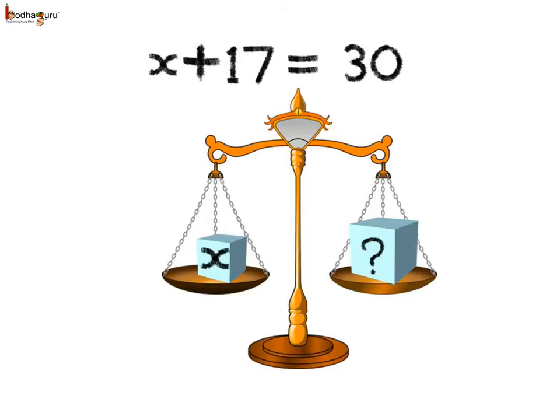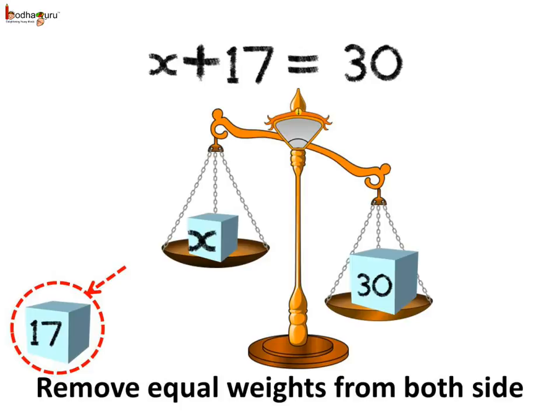Now, we are measuring the weight of x — that is, we have to find x. On one side we have x and 17, and on the other side we have 30. We want to measure x, so we don't need 17. 17 can be taken off — that is, it can be subtracted or removed.